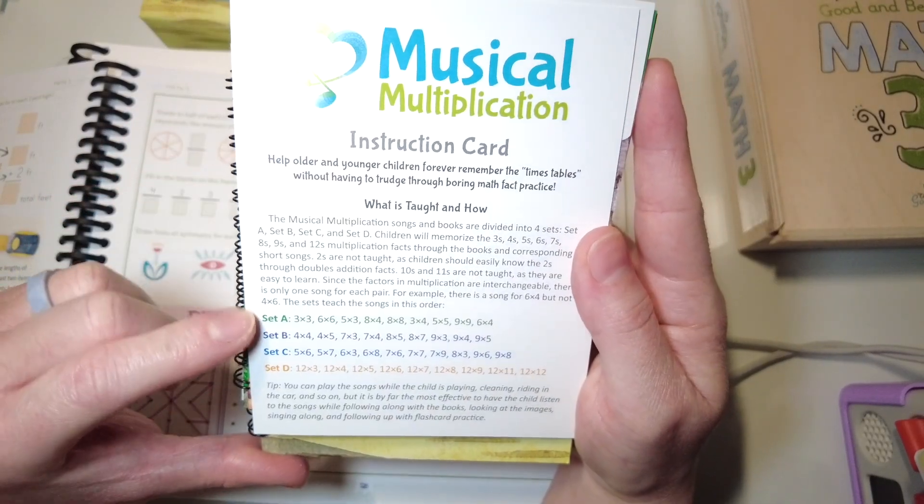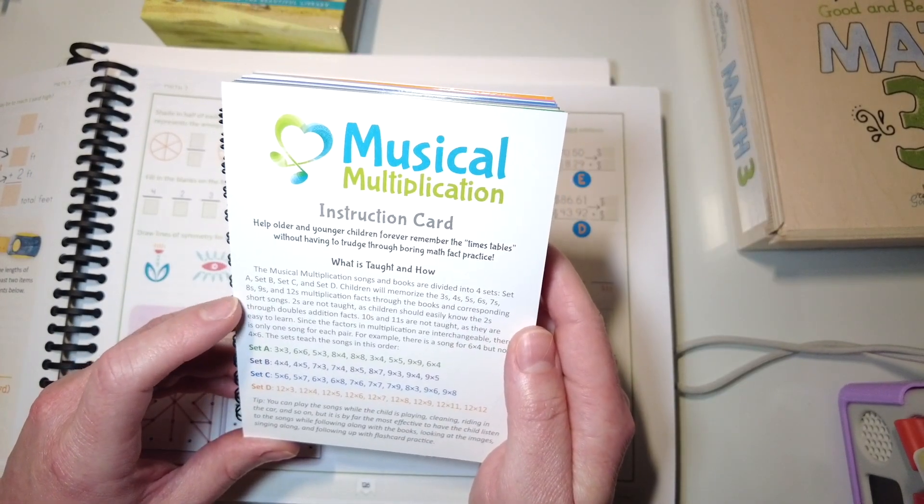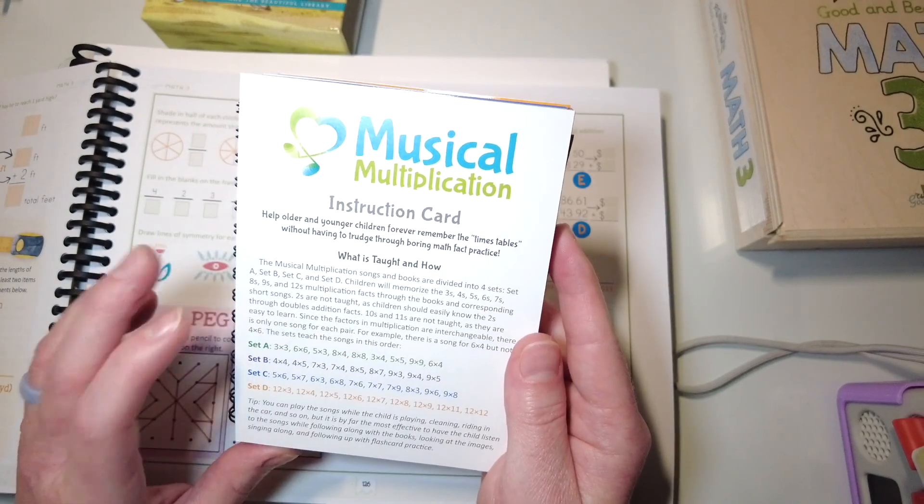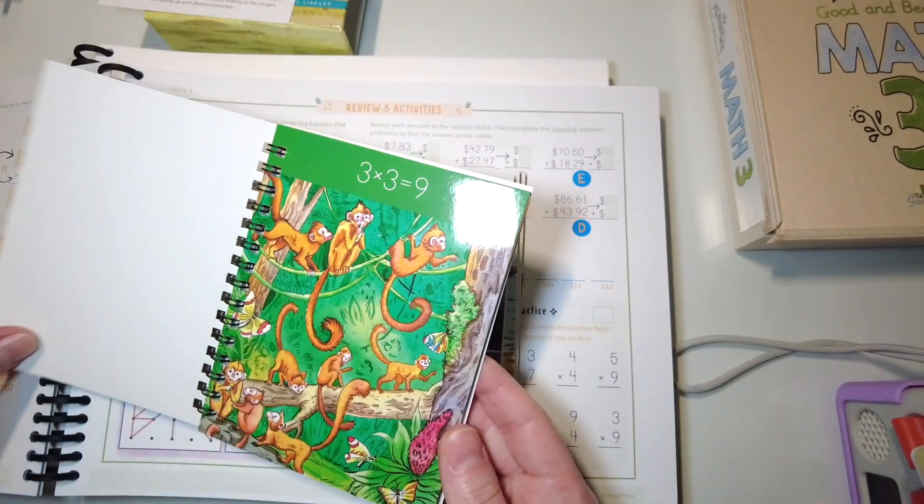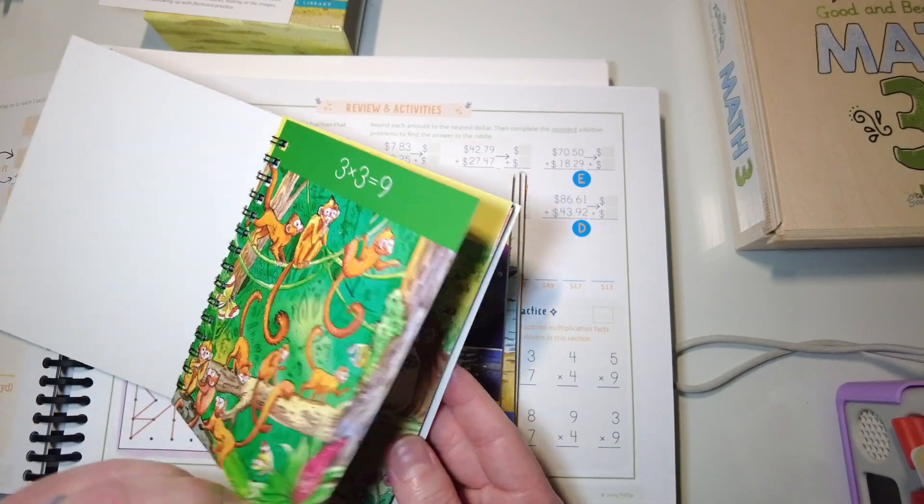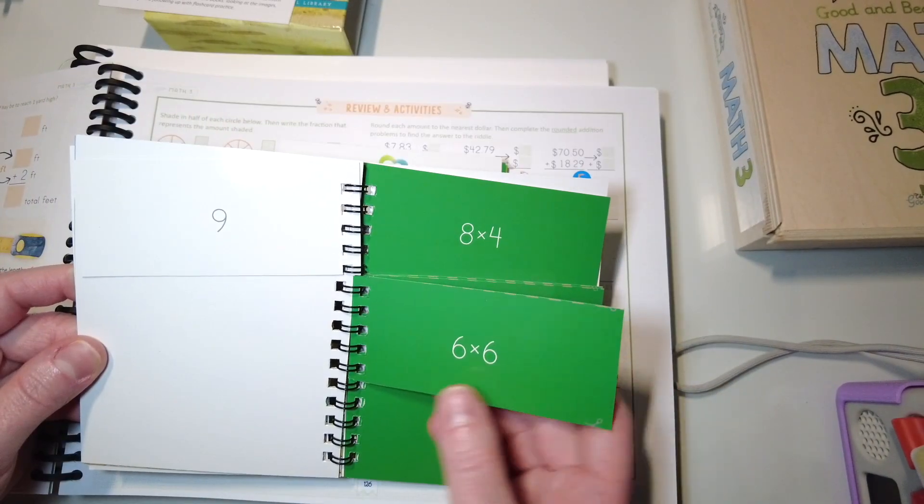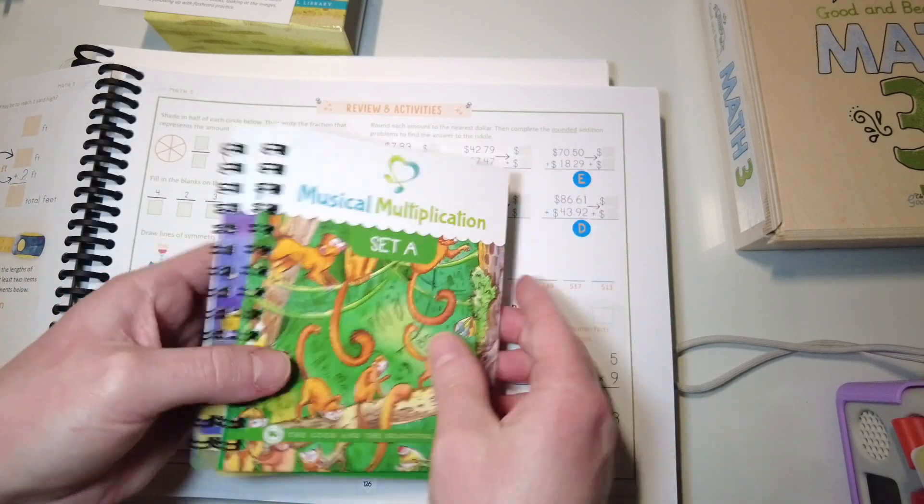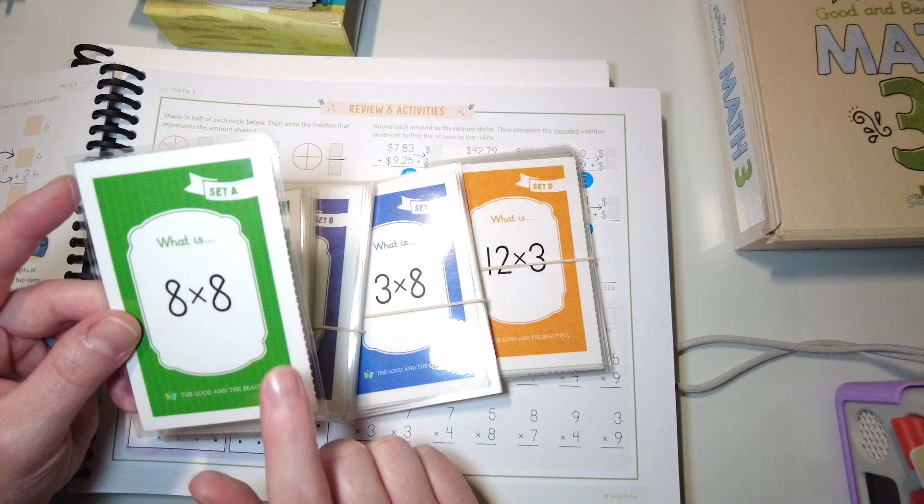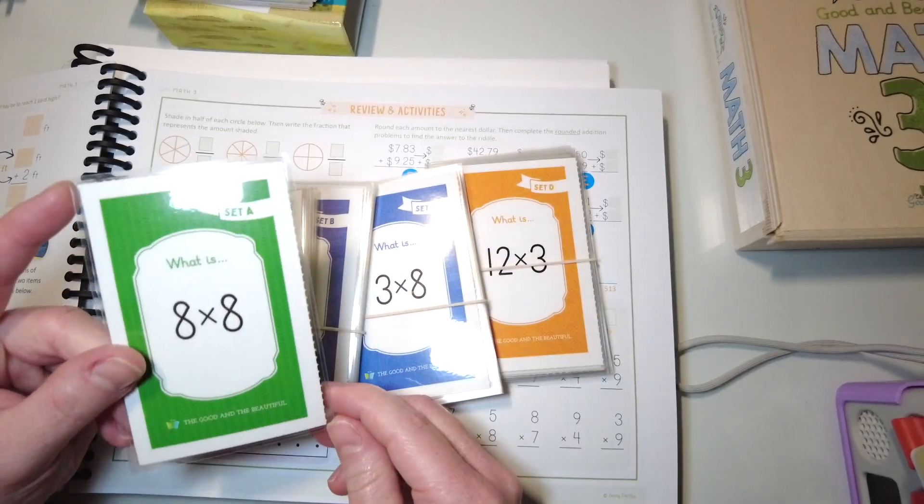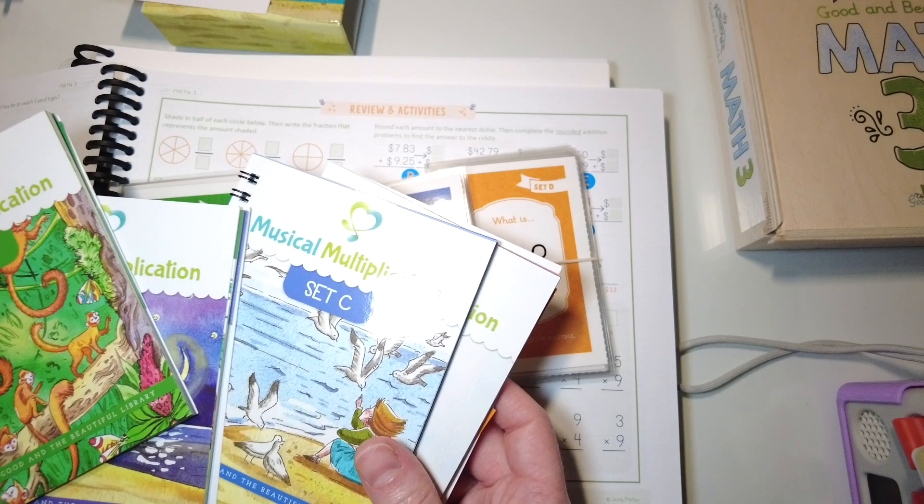So you can see how that works. We also use the musical multiplication books that come with it. Here it just shows you how it's taught and what facts are in each set. So they will memorize threes, fours, fives, sixes, sevens, eights, nines, and twelves. There's one song for each pair. They say here six times four but not four times six, so this is what is taught. We have set A here, so it will actually have the picture which will also help reinforce with each song, and then in the back there's little built-in flashcards as well.